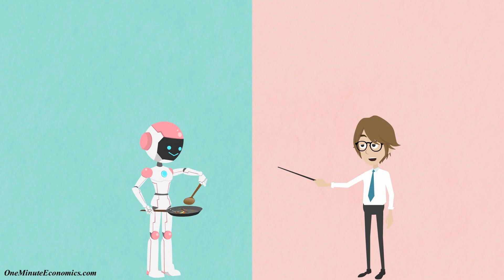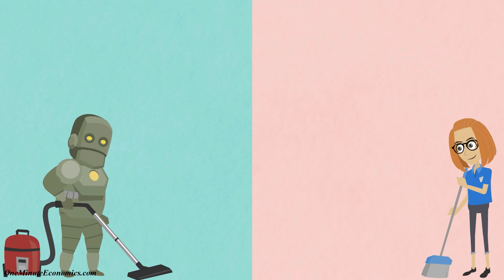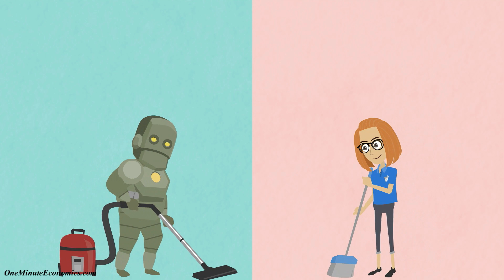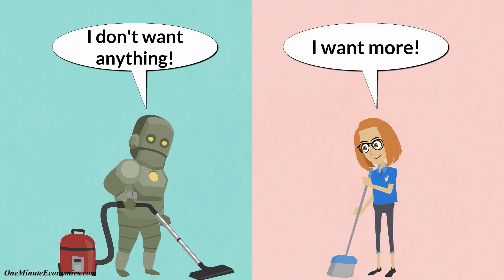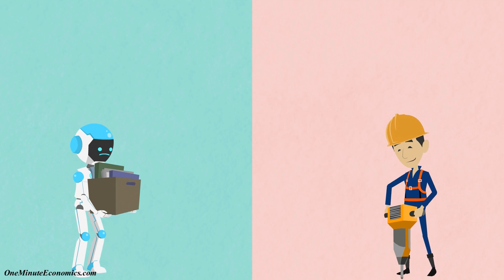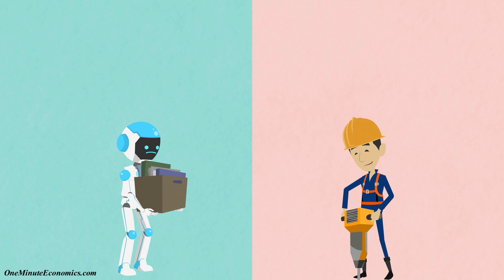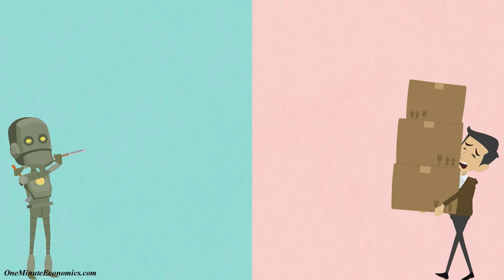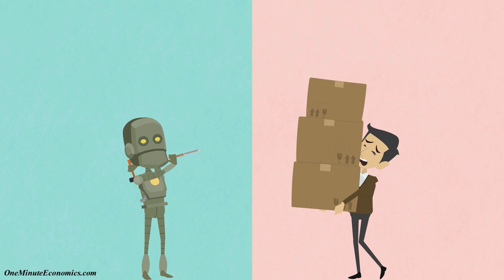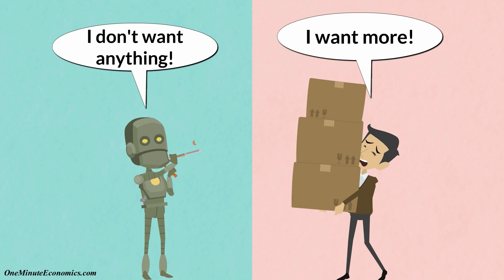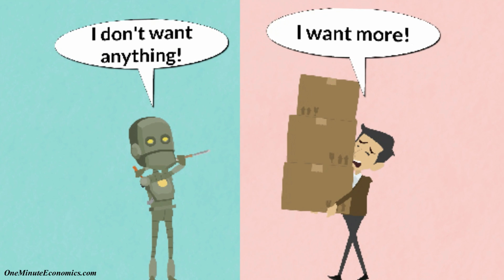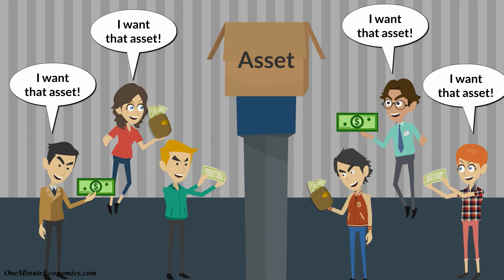As mentioned in the business cycle video, humans aren't robots. Greed is one of the desires which make us imperfect, and it's precisely greed that fuels asset bubbles. During a bubble, the price of an asset goes up sharply over a certain period of time, but then collapses.